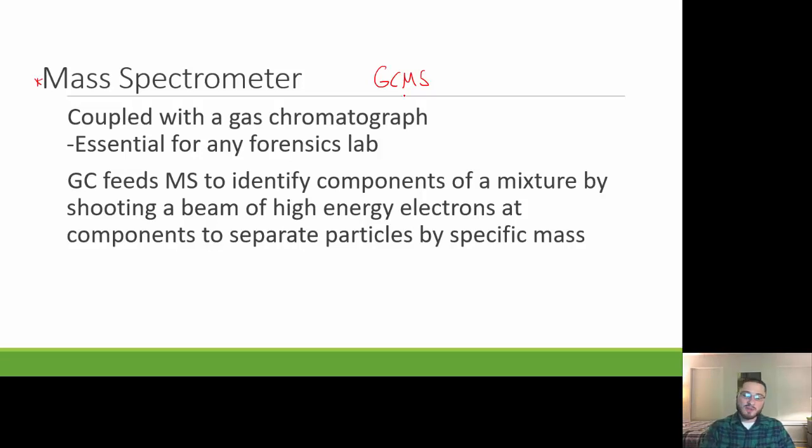When we talk about these different types of instruments that are used in the forensic science lab, you want to understand that the GCMS is the most important. Keep these things in mind as we move forward in the year, as we start talking more about different substances that you find at the crime scene, as well as when we start talking about DNA and DNA evidence.